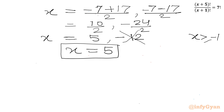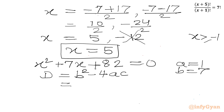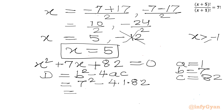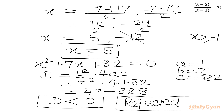Now our second quadratic equation: x² + 7x + 82 = 0. Let us check the discriminant only. b²−4ac = 7² − 4(1)(82) = 49 − 328 = −279. The discriminant is negative, so we get complex solutions. Therefore this equation is rejected.